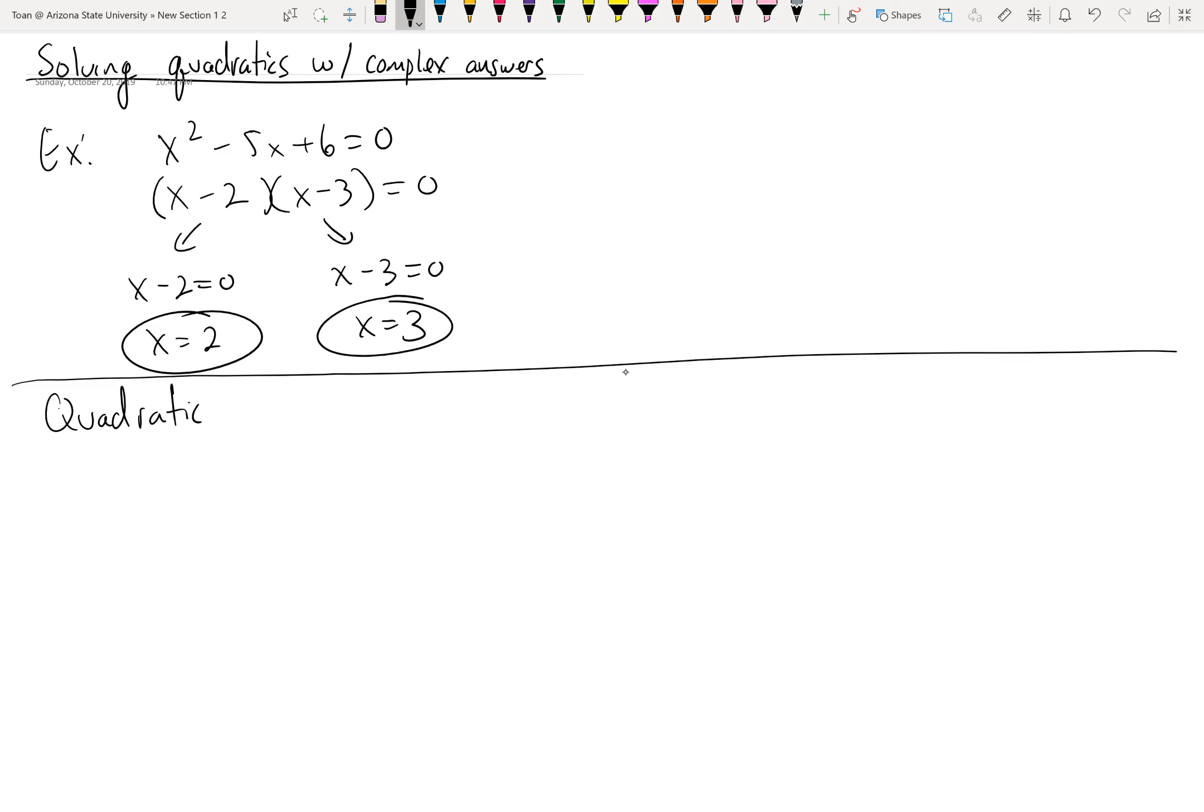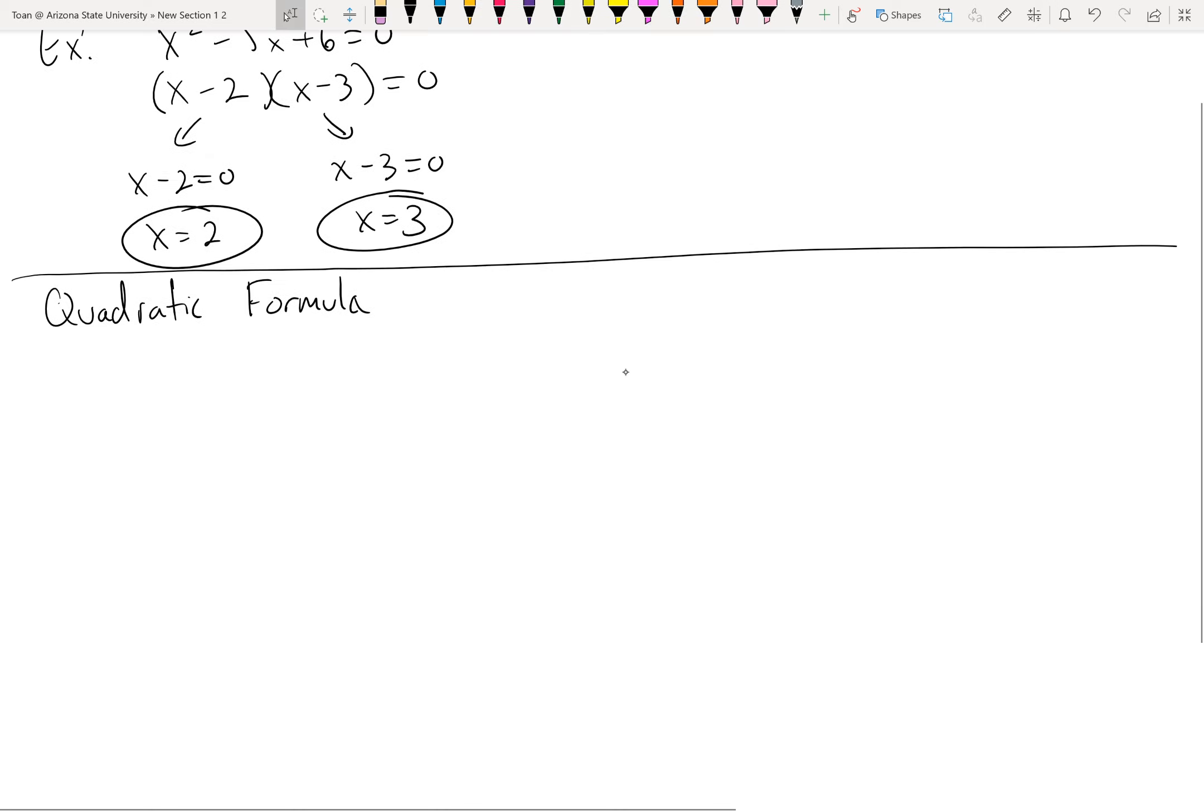This should not be anything new to people, but we'll go ahead and write it down for the sake of our notes. The quadratic formula states, if I want to solve this equation ax² + bx + c = 0, and this equals 0 is important, it must equal 0, then the solutions will be -b ± √(b² - 4ac) all over 2a, where a, b, and c are just the coefficients of your problem.